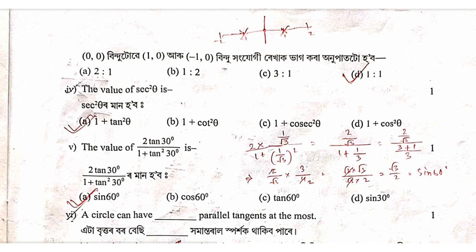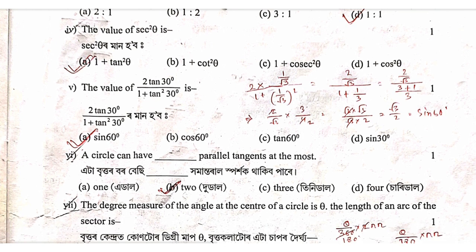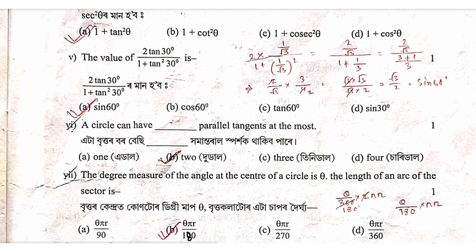The next question: what is the value of sec square theta? The answer is 1 plus tan square theta. For the value of 2 tan theta by 1 plus tan square theta at 30 degrees: 2 into tan 30 is 1 by root 3, and 1 plus tan square theta gives 1 plus 1 by root 3 whole square. This simplifies to sine 60 degrees, which equals root 3 by 2.